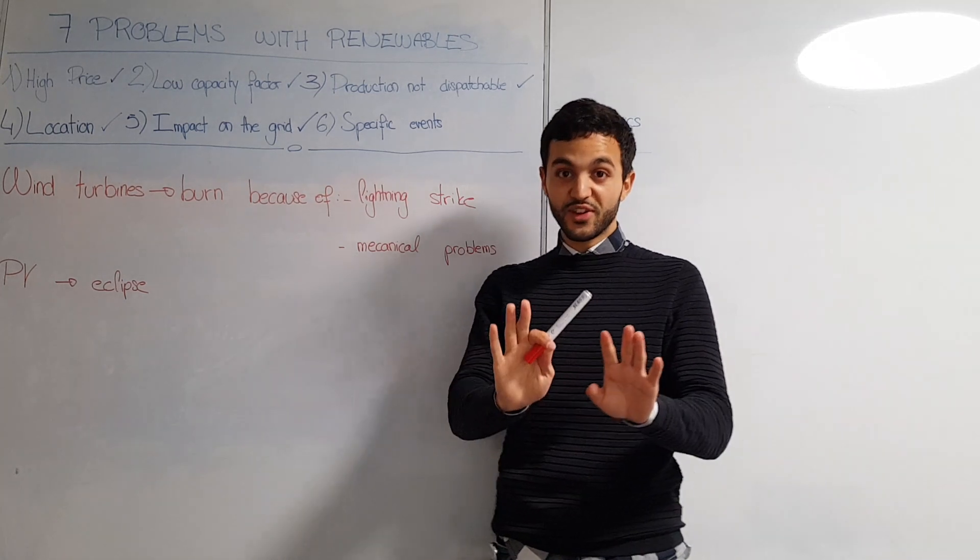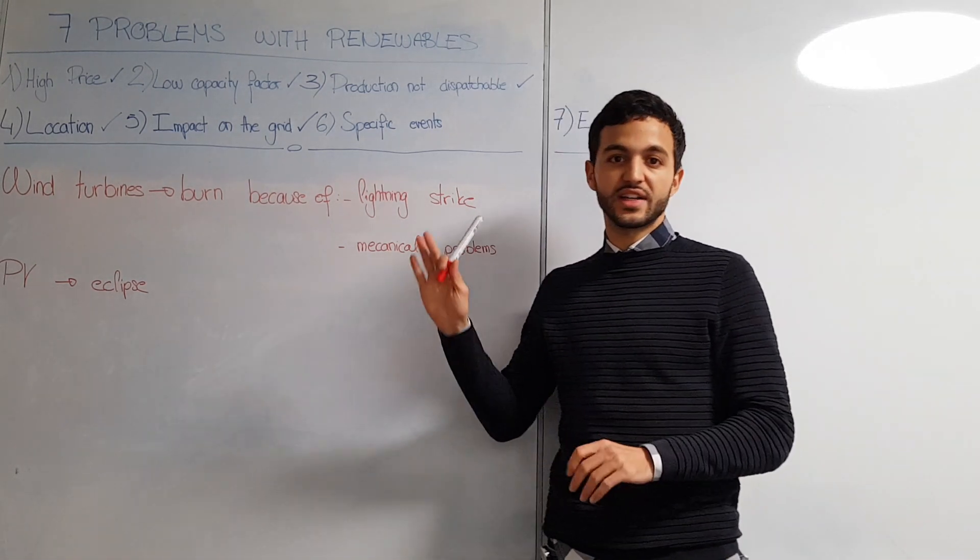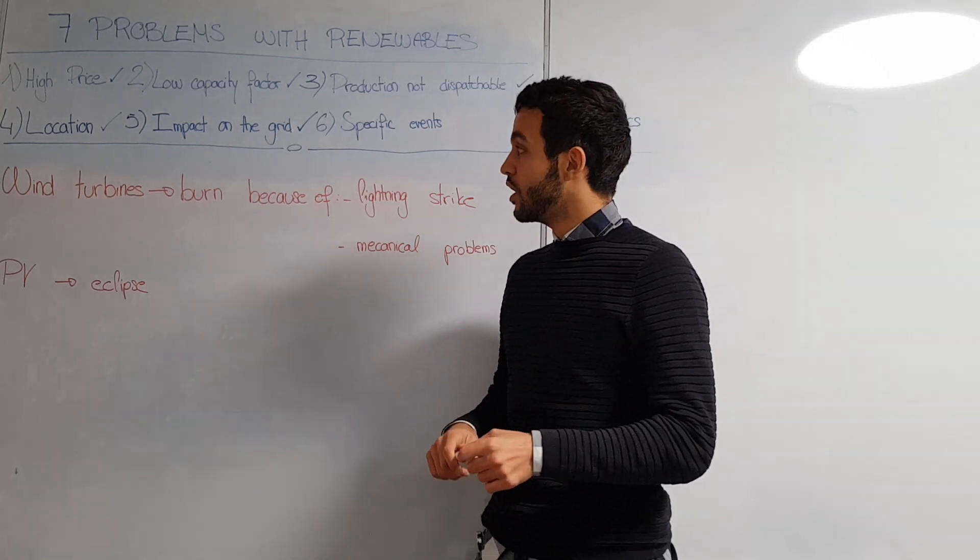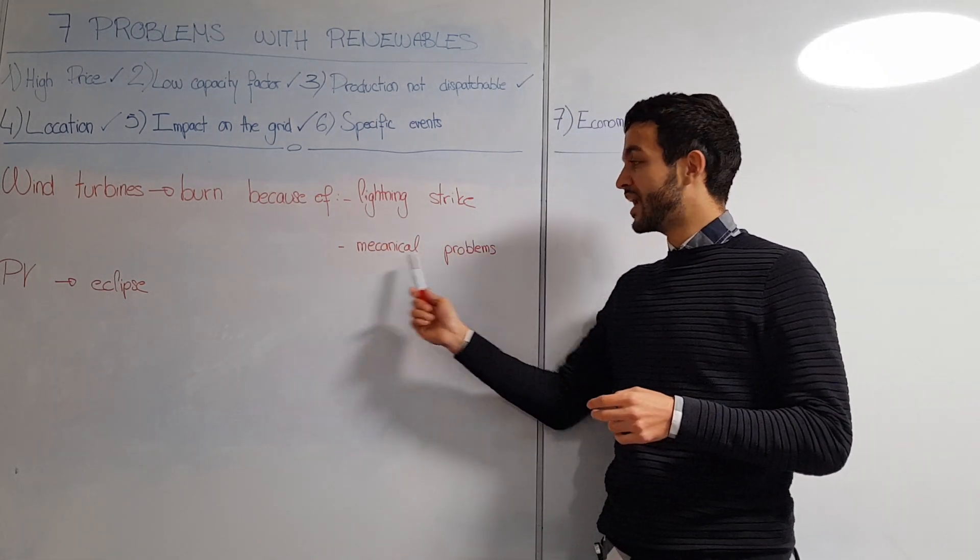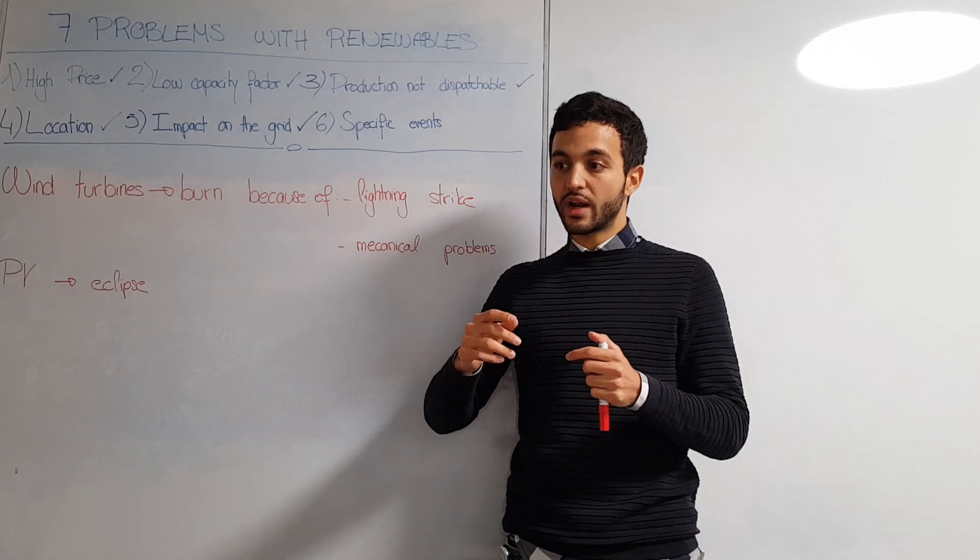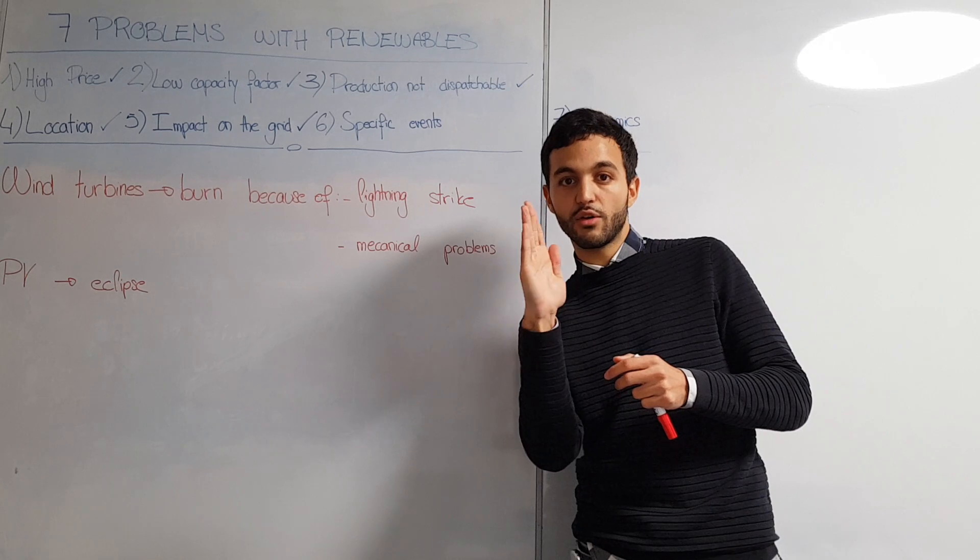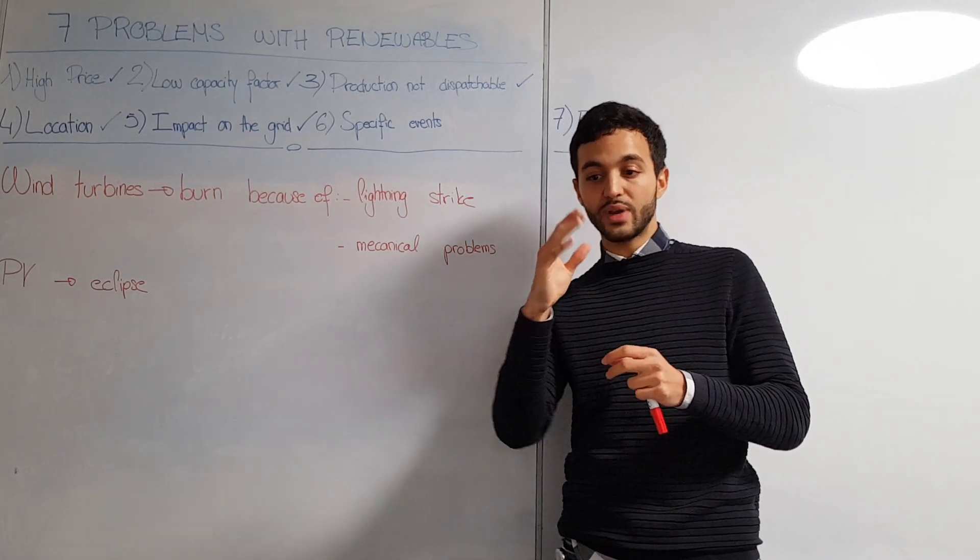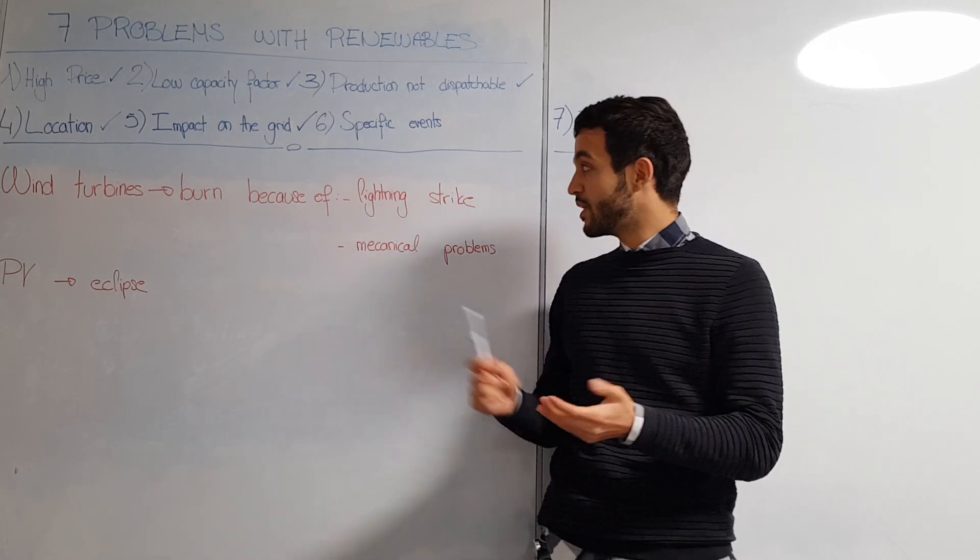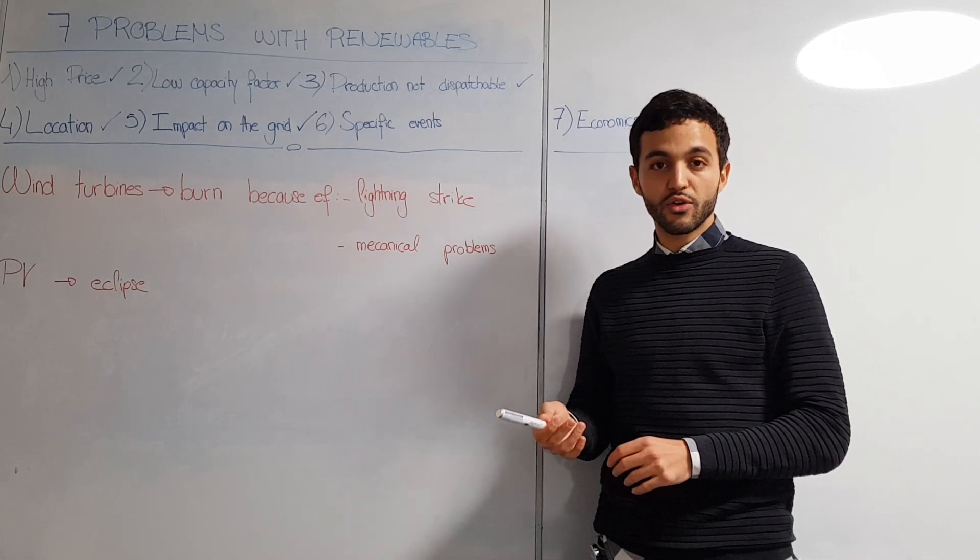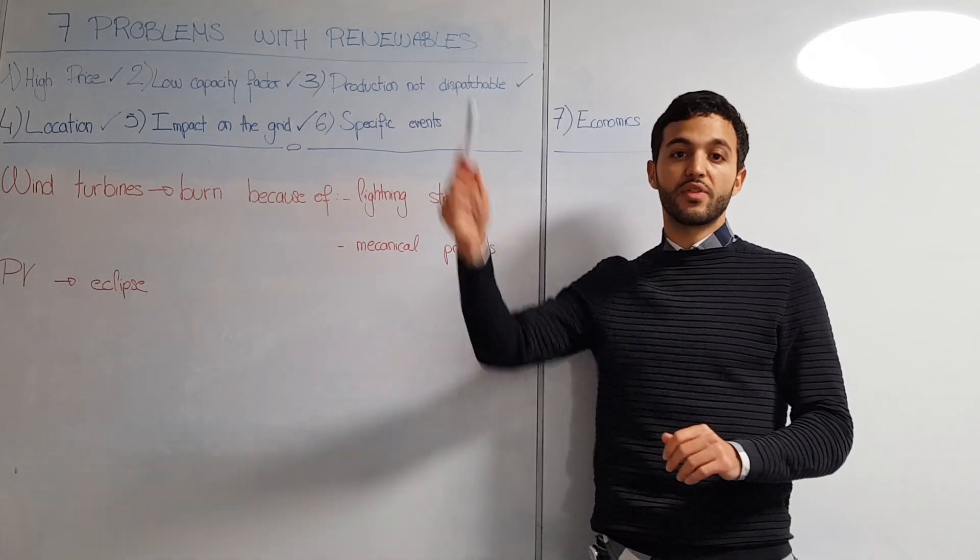Now we get to the sixth point - don't worry, the video is almost finished. This point is specific events. For this one it's not really a disadvantage, it's more stuff that can happen, but you could easily find similar problems with traditional power plants. Let's start with wind turbines. One problem is they sometimes start burning. The two main reasons are lightning strikes and mechanical problems. Mechanical problems happen when you have too much wind - the turbine is rotating too fast, and normally you can curtail production by rotating the angle of the blade. Sometimes when you have mechanical problems and you're not able to do it, it's going too fast. Then you have electrical components just next to hydraulic oil, so you can have issues and it starts burning. The problem when you have fire in a wind turbine is first you have a lot of oxygen worsening the situation, and second with the altitude it's almost impossible to get up there and turn it off.